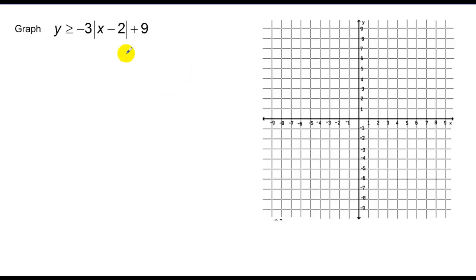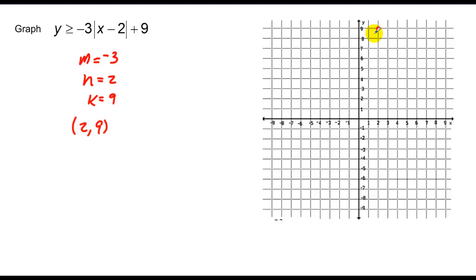Here's another absolute value graph, a little more complicated. We have a slope of negative 3, h equals 2, k equals 9. So my translation is (2, 9). I move over 2, up 9, put a dot. Then with a slope of negative 3, I go down 3 over 1 repeatedly on both sides. This time I draw a solid line because it's equal to. I pick sample point (0, 0), and notice that (0, 0) is on the interior of the absolute value.